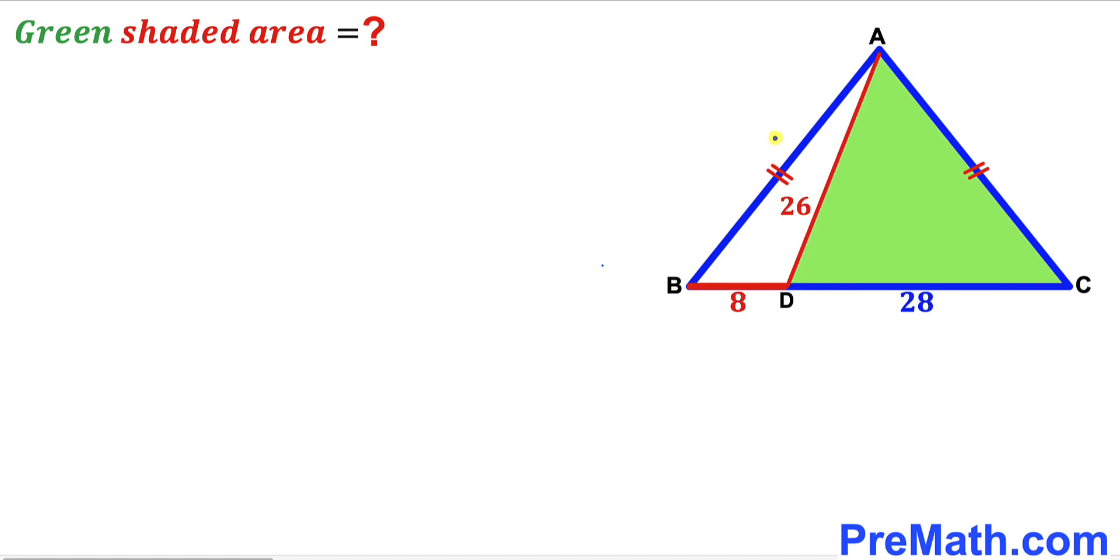Welcome to PreMath. In this video we have this isosceles triangle ABC along with line segment AD, as you can see in the diagram. As a result, we have this green shaded triangle ADC.